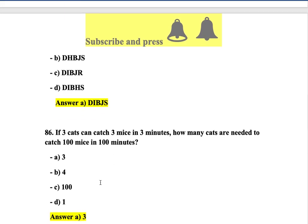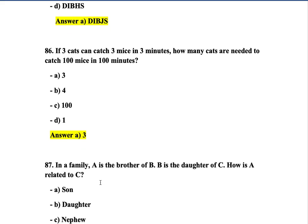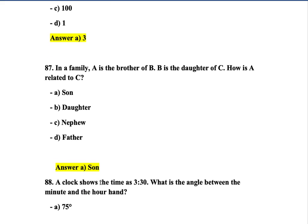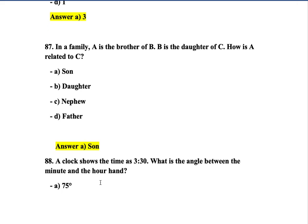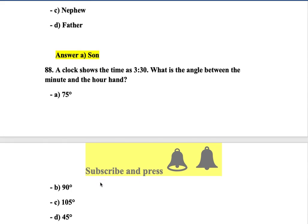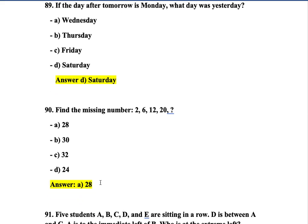Question 86: If three cats can catch three mice in three minutes, the correct answer is three — option A. Question 87: In a family, A is the brother of B and B is the daughter of C — how is A related to C? A son — option A. Question 88: A clock shows 3:30 — what is the angle between the minute and hour hands? The answer is 45°. Question 89: If the day after tomorrow is Monday, what day was yesterday? It is Saturday.